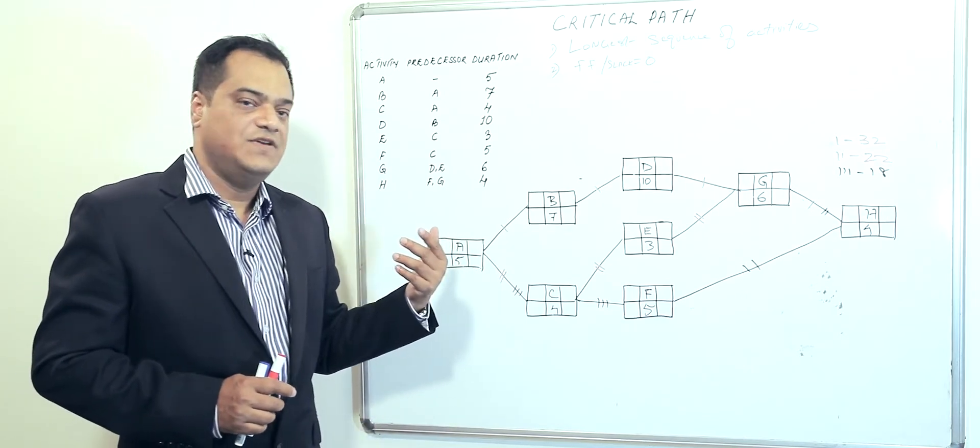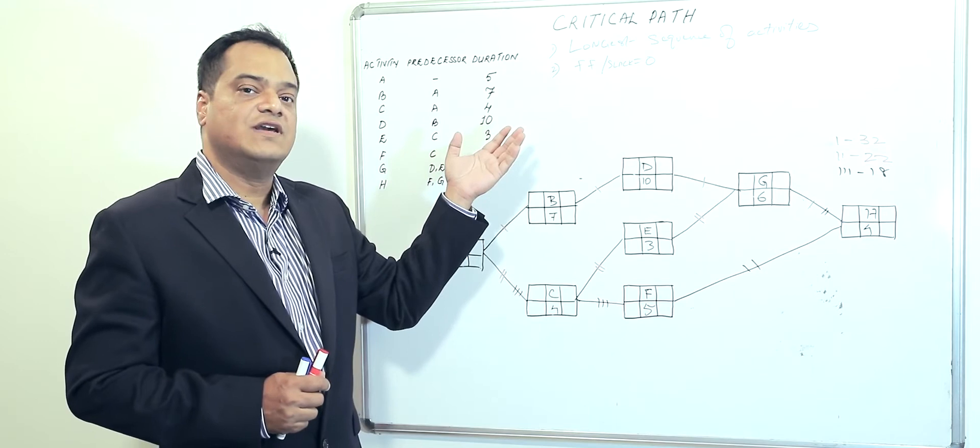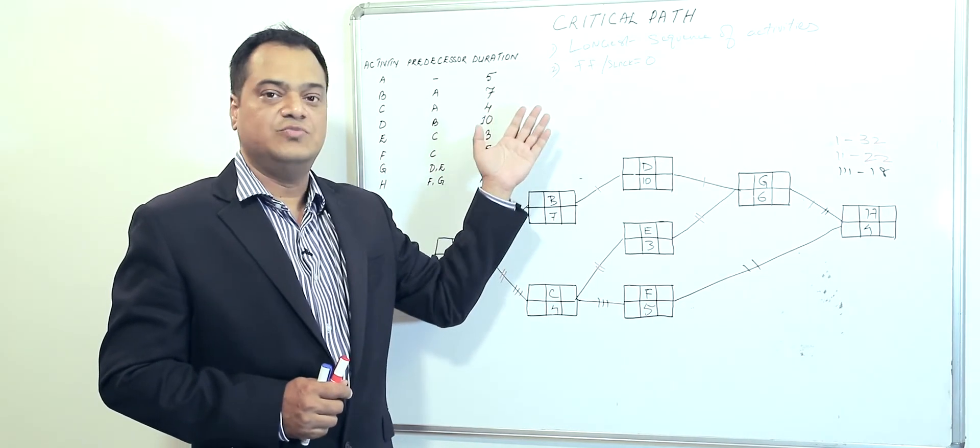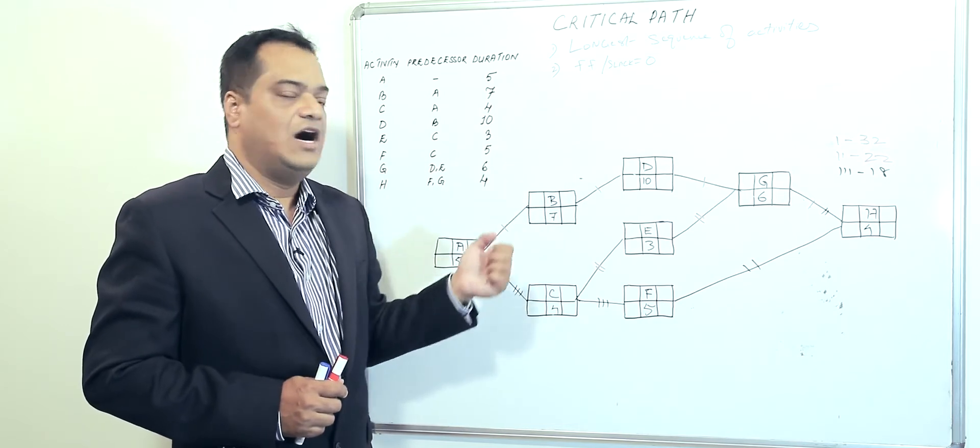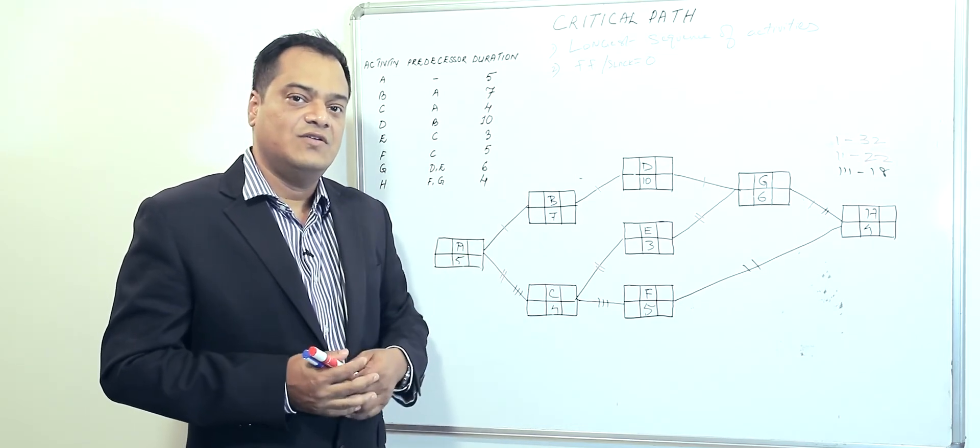There you will see there is another definition of critical path: the slack or the free float is going to be equal to zero. How do we come up with slack or free float? Keep watching our next video. Thank you.